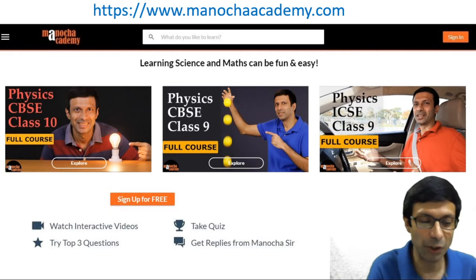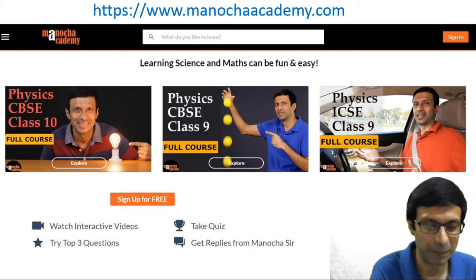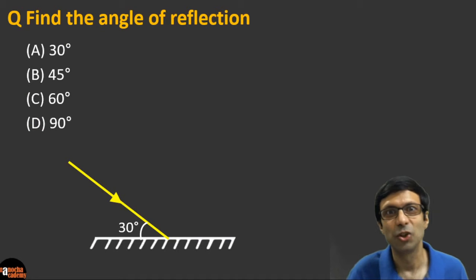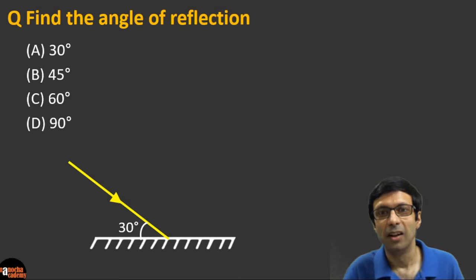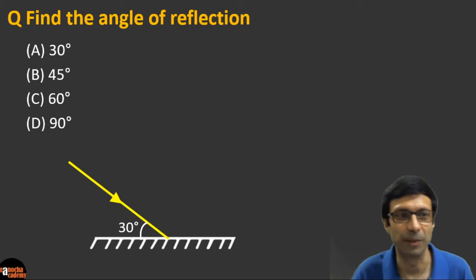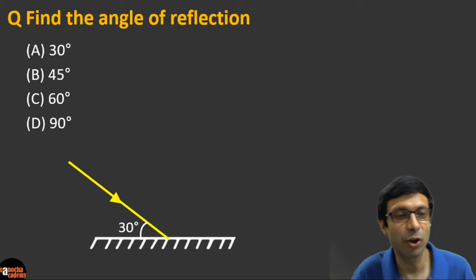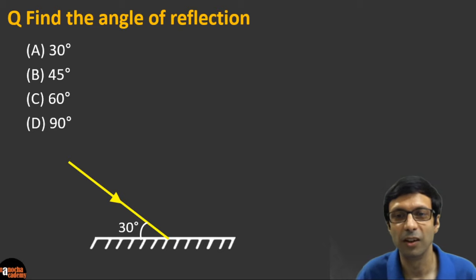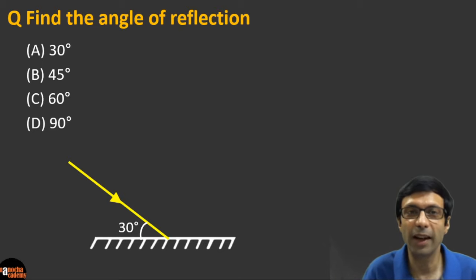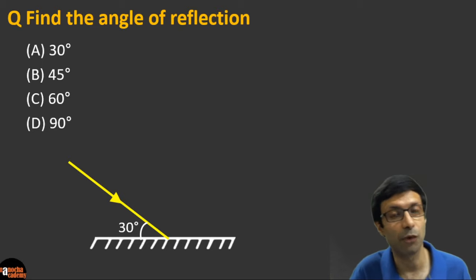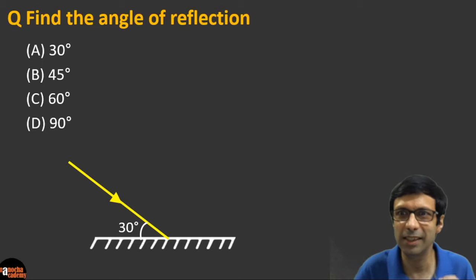Alright guys, are you ready? Let's get started. Here's our first question: based on this diagram, you need to find the angle of reflection. Is it (a) 30 degrees, (b) 45 degrees, (c) 60 degrees, or (d) 90 degrees?